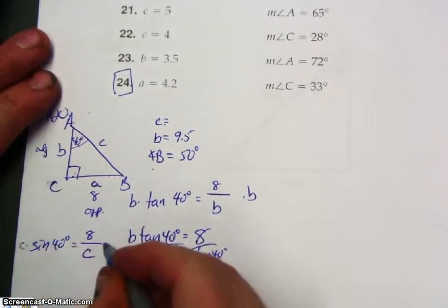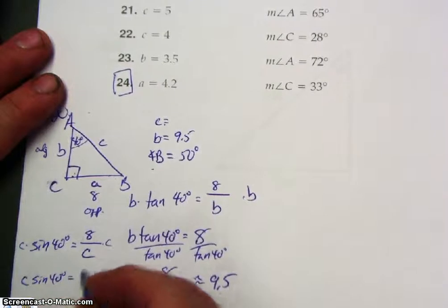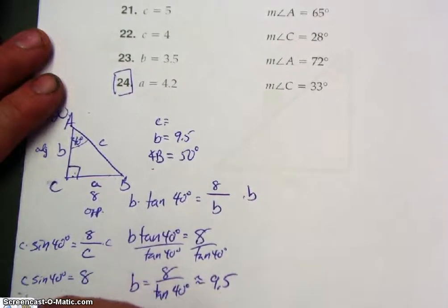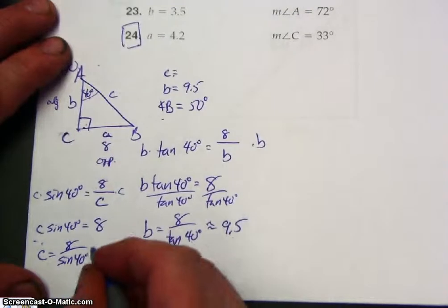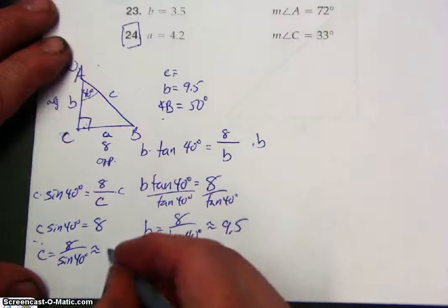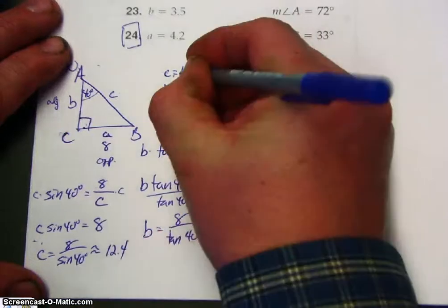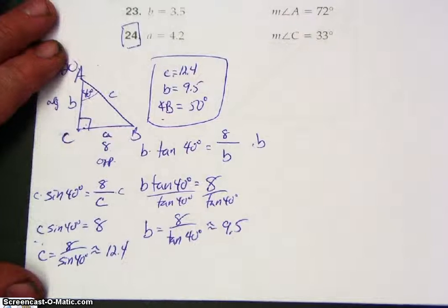All right, so multiply both sides by C. So C sine 40 degrees equals 8. So C is equal to 8 over sine 40 degrees. And just use the calculator. So 8 divided by sine of 40 degrees, and I get 12.4. All right, so those are the three missing parts.